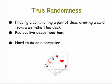So true randomness includes processes like flipping a coin, rolling a pair of dice, or drawing a card from a shuffled deck.